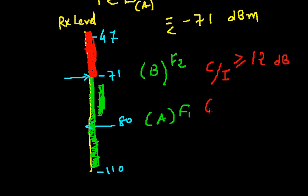And C by A should be equal or greater than minus 9 dB. Please remember these two: this is co-channel, this is adjacent channel.